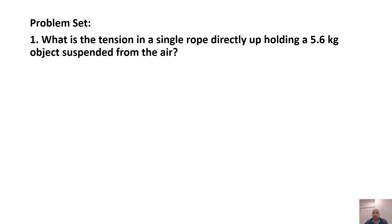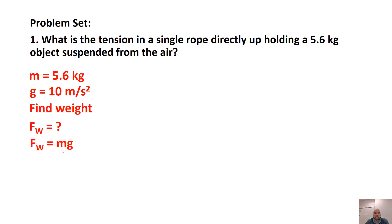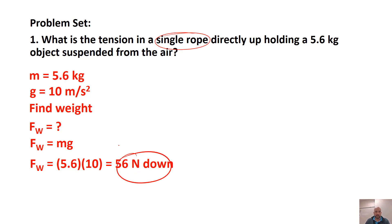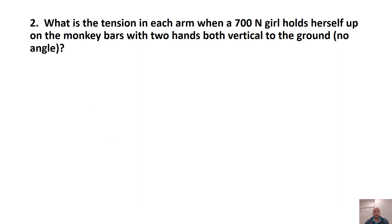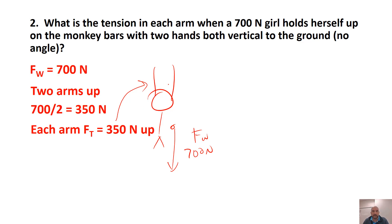What's the tension in a single rope directly holding up a 5.6 kilogram object suspended in air? Take mass 5.6 kg times gravity 10 to find weight: 56 newtons. With a single rope directed straight up, the tension equals the weight — 56 newtons. What's the tension in each arm when a 700 newton girl holds herself up on monkey bars with two hands? Divide 700 by 2: each arm supports 350 newtons upward.